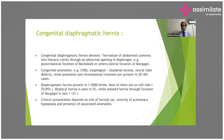A common malformation is congenital diaphragmatic hernia, which denotes herniation of abdominal content into the thoracic cavity through an abnormal opening in the diaphragm. This may occur through the posterolateral foramen of Bochdalek or the anterolateral foramen of Morgagni.